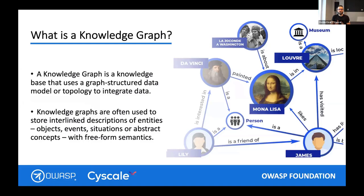A knowledge graph in its purest form, as Google and others have defined it, is structured data that creates relationships between nodes that compose the graph. If you've studied computer science you've come across this idea a lot. There are many good use cases for a graph, and one very good use case is trying to see and understand the cybersecurity landscape of your organization. The concept of a knowledge graph creates interlinked descriptions between assets and objects that you can later explore and navigate.